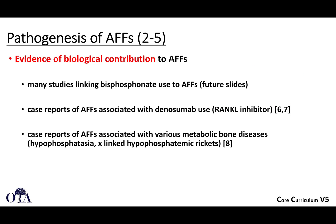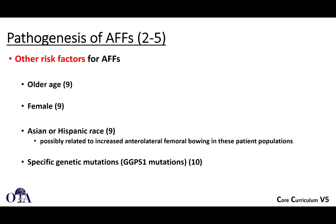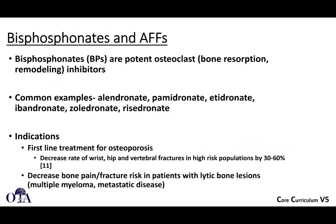There is evidence of biological contribution to atypical femur fractures. Many studies have linked bisphosphonate use, which inhibits osteoclast function. There are also case reports of AFF with denosumab use, which is a RANK-L inhibitor, and case reports with various metabolic bone diseases. Other risk factors include older age, female sex, Asian or Hispanic race — possibly because of increased incidence of anterolateral femoral bowing in these populations — and specific genetic mutations.